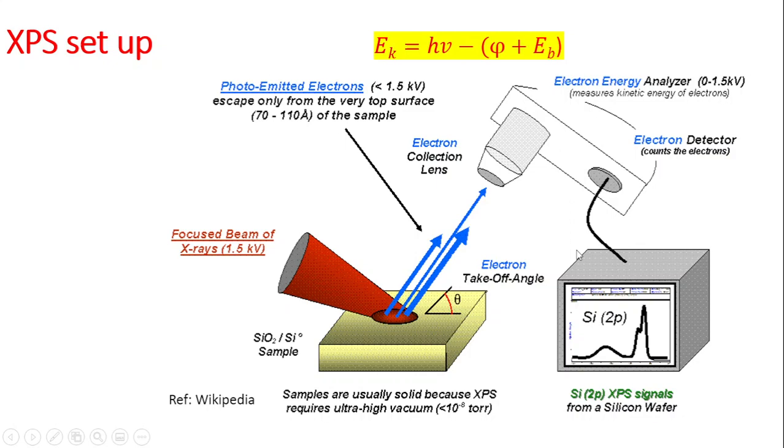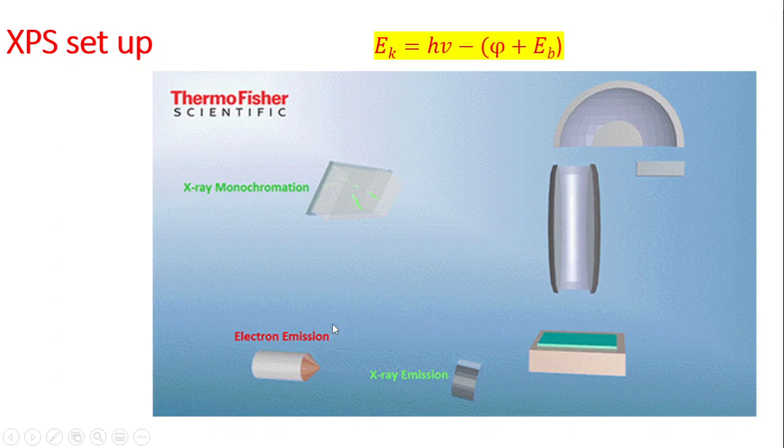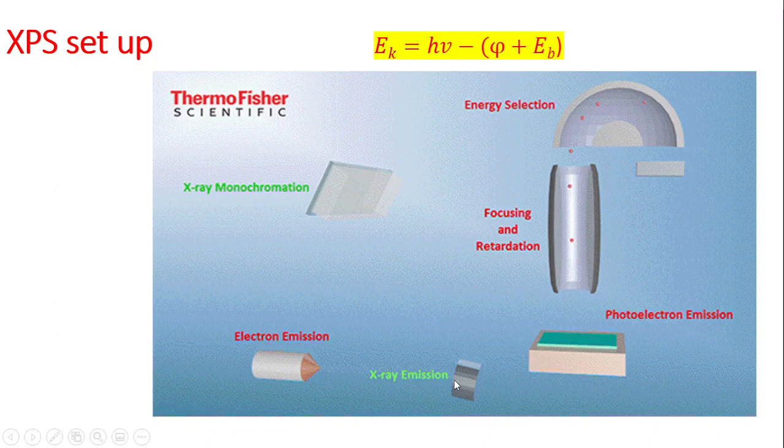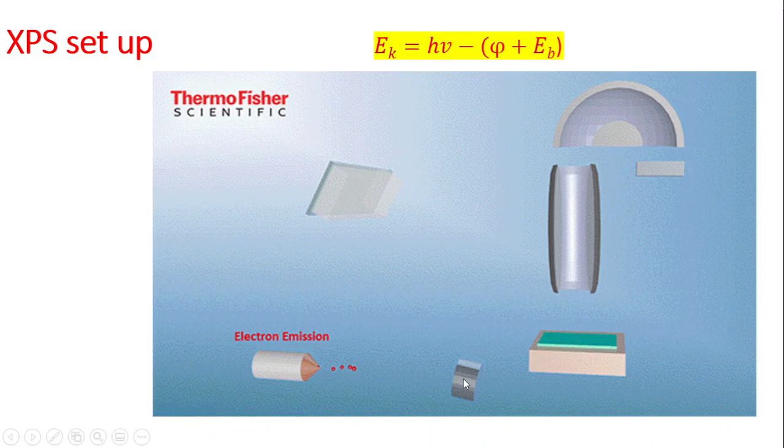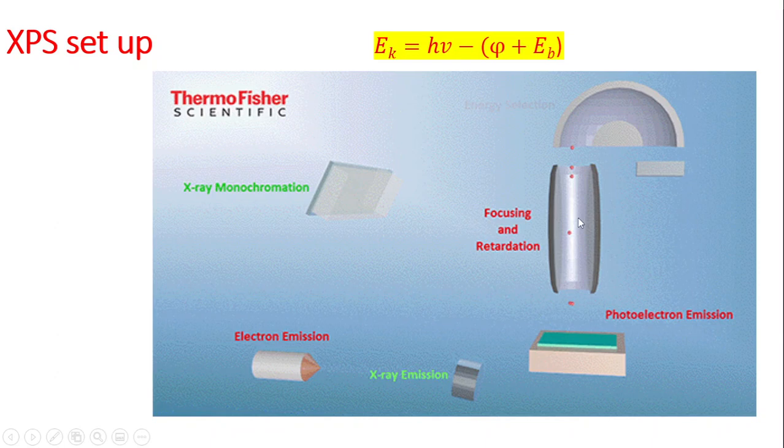This animation shows how the XPS process works. An electron beam source bombards electrons onto an X-ray target like copper or aluminum, which emits X-rays. These X-rays are focused onto a monochromator, which reflects the light onto the sample. The sample emits photoelectrons that are collected by the detector, and this information is converted into intensity and binding energy.